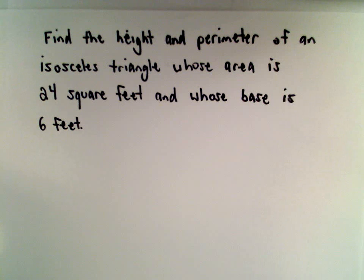In this example, we want to find the height and the perimeter of an isosceles triangle whose area is 24 square feet and whose base is 6 feet.